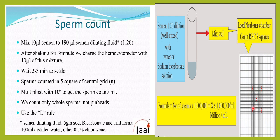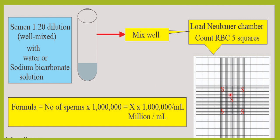We count the sperms in 5 grids — the RBC grid, the central grid. You can see here: 1, 2, 3, 4, 5. Whatever sperms you count in these 5 grids, you multiply by 1 million to get the number of sperms per ml of semen. We only count complete sperms — not just the head or just the tail. The complete sperm must be counted, following the L rule. The formula is: number of sperms counted multiplied by 1 million.